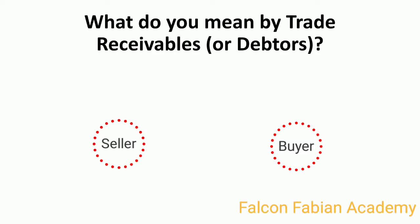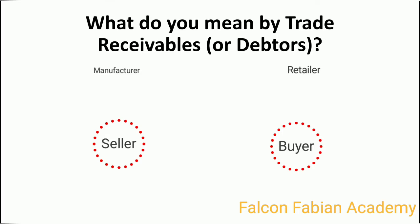Let's take it this way: there is a seller and a buyer. The seller is a manufacturer of goods and the buyer is a retailer who has a shop and sells to customers. Let's make this even more simple — let the seller be in the business of baking, and the buyer is a shopkeeper who buys biscuits and cookies from him and sells to consumers. Let's call the seller A and the buyer B.